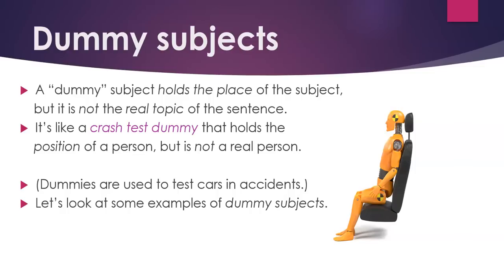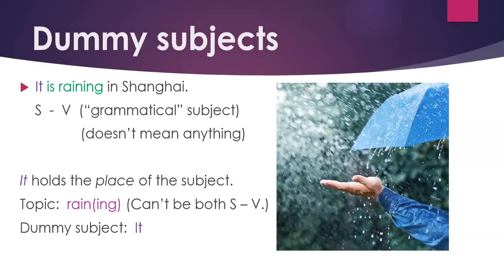What about dummy subjects? A dummy subject holds the place of the subject, but it is not the real topic of the sentence. It's like a crash test dummy that holds the position of a person but is not a real person. Dummies are sometimes used to test cars in accidents so we don't have to use real people. For example, 'It is raining in Shanghai.' The subject is it; is raining is the verb. The word it is simply a grammatical subject — it doesn't really mean anything, it just functions as a subject, holding the place.